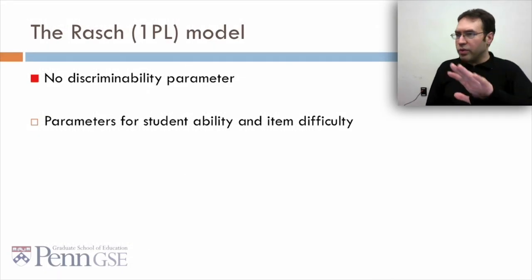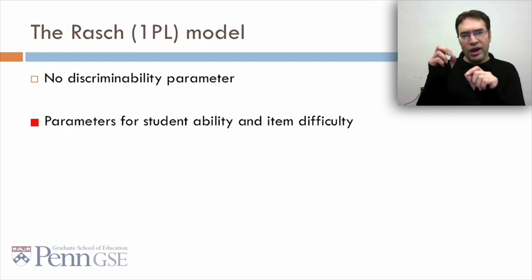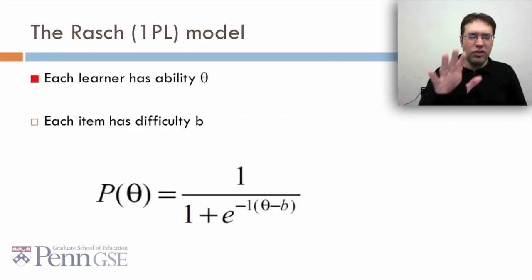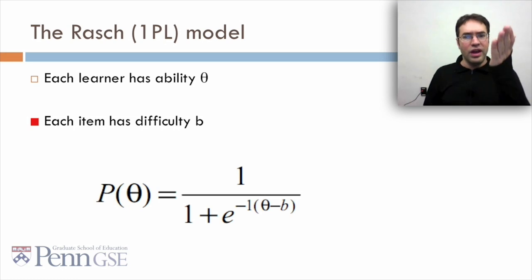It's got no discriminability parameters, so we're going to hold off on talking about that for another minute. But it does have two sets of parameters: a set of parameters for student ability and a set of parameters for item difficulty. Each learner's got ability theta, each item has difficulty b, and you can compute the probability that a student will get something right by a function involving an exponential function with theta minus b. So we take the ability, we subtract the difficulty. They're on the same scale.